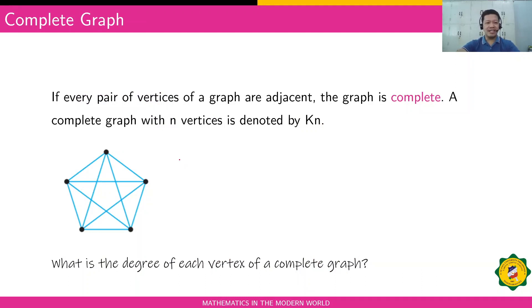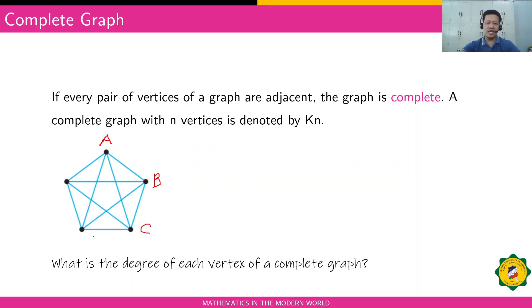When do we say a graph is complete? If every pair of vertices of a graph are adjacent — meaning each vertex is connected to every other vertex — the graph is called complete. For example, vertex A must be connected to all other vertices, as you can see here it's connected to the other four vertices.